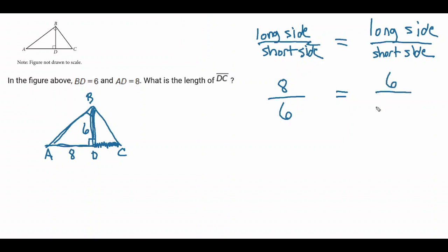And the one you don't know, what do you say when you don't know? You say x. And now you just have a fraction, equal sign, fraction, and so you cross multiply.